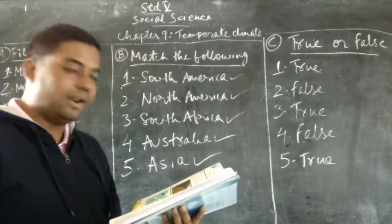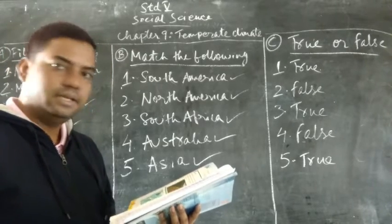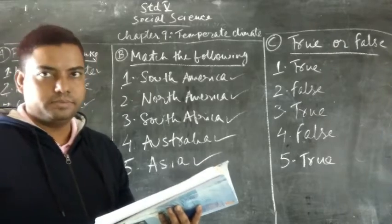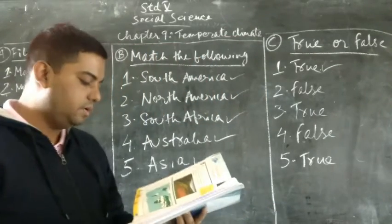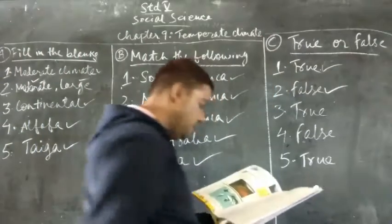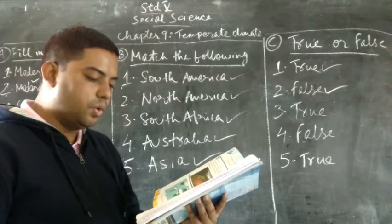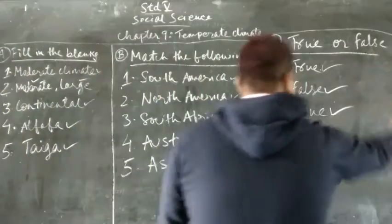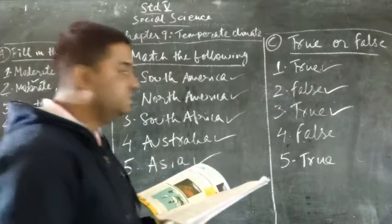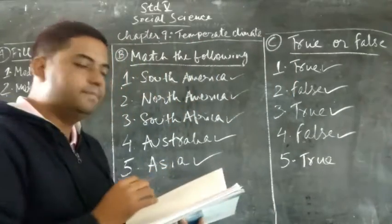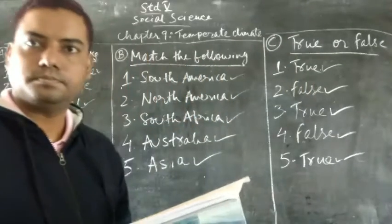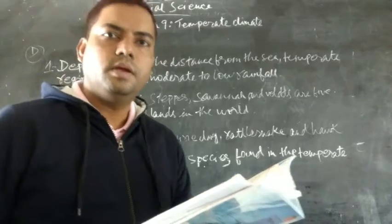Now we see question number 3: Write True for true sentences and False for false sentences. Question 1: Temperate climate spreads across most of the continents in the world — the answer is True. Question 2: Temperate zone has extreme climate — the answer is False. Question 3: Temperate grasslands are known as prairies in North America — the answer is True. Question 4: Alfalfa is a weed that grows commonly in the prairies — the answer is False. Question 5: Temperate grasslands support extensive farming — the answer is True.